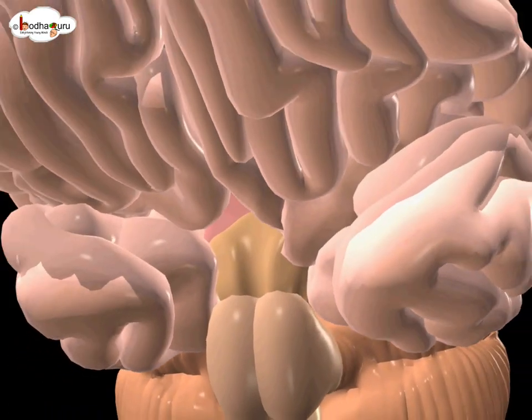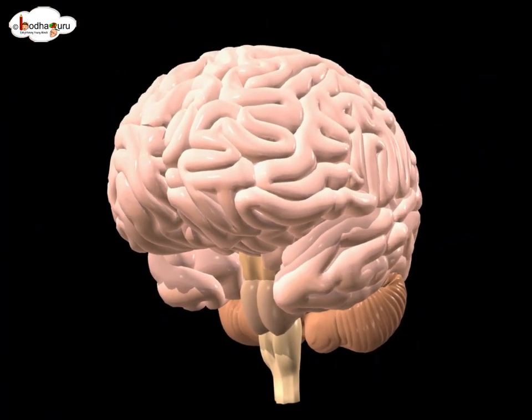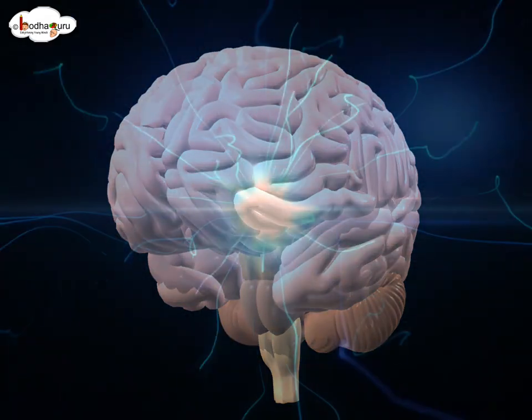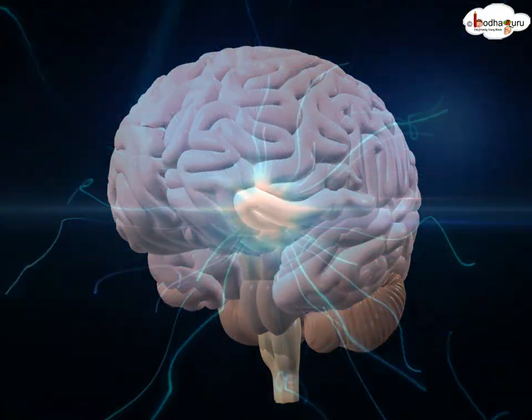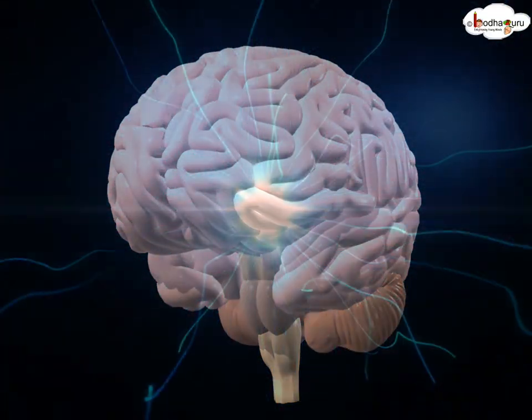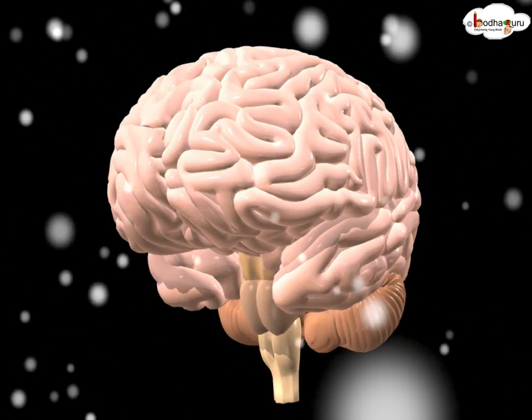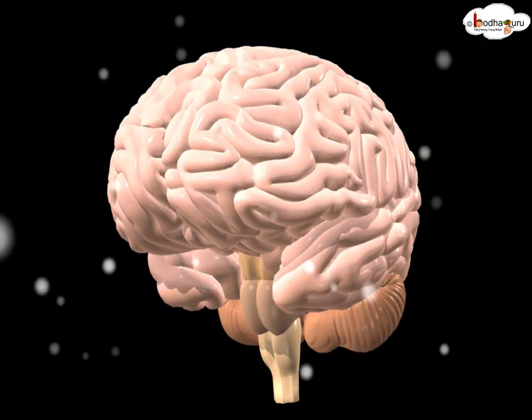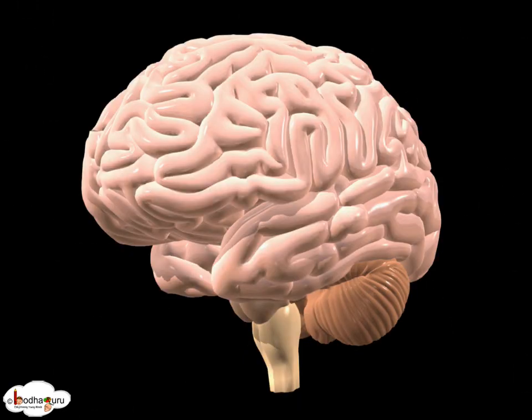Thus our complex brain ensures our survival by helping to adapt with the environment, controlling vital functions in body, and developing the intelligence that helps us to overcome adverse situations.